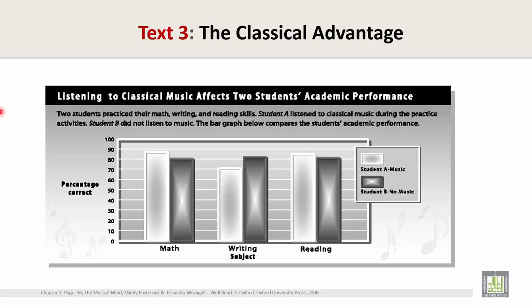Two students practiced their math, writing, and reading skills. Student A listened to classical music during the practice activities. Student B did not listen to music. The bar graph compares their academic performance. The white color represents Student A with music; the black color represents Student B with no music.